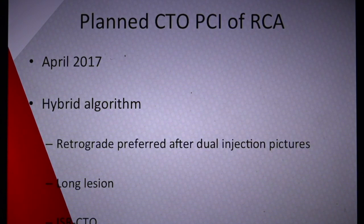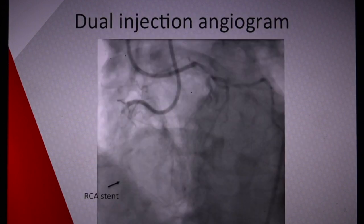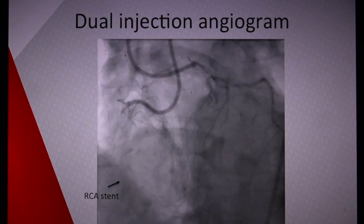He proceeded to have a coronary angiogram in February 2017 which showed the RCA stent was completely occluded with ISR of the previous mid to distal RCA stent. We planned a retrograde CTO PCI of the RCA in April 2017, deciding to go for the hybrid algorithm and preferring a retrograde CTO option. This picture shows you the RCA stent in the distal RCA, with the CTO starting significantly proximal to that and no visible distal runoff.